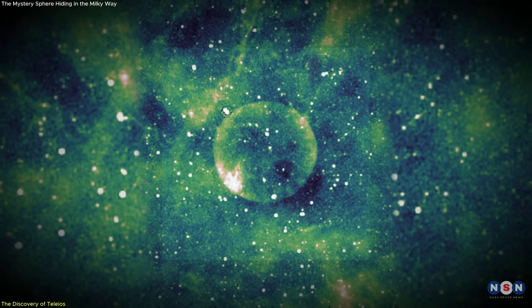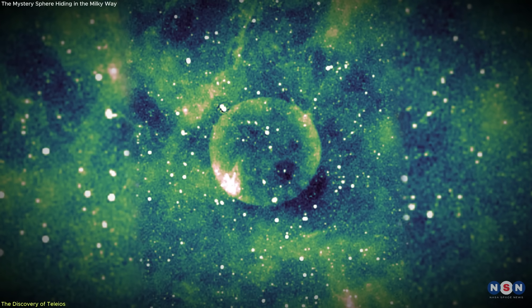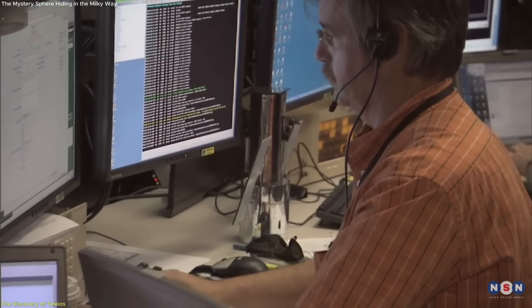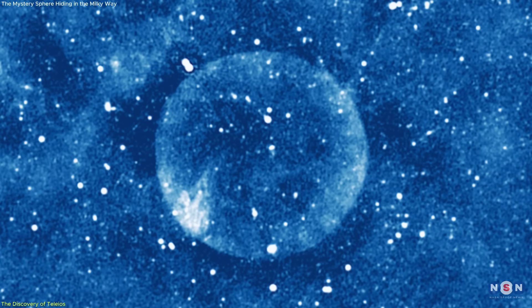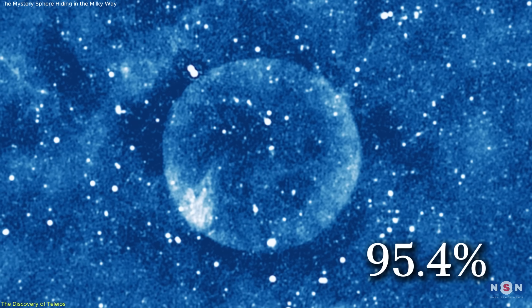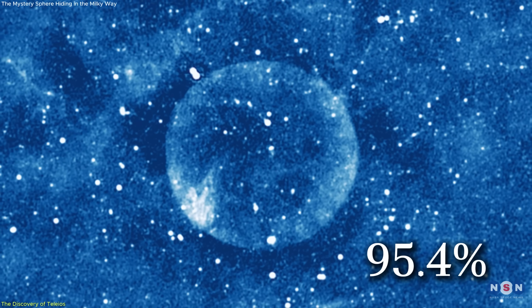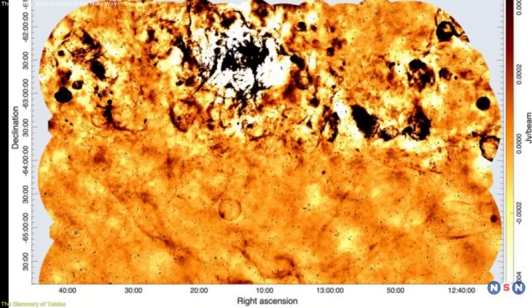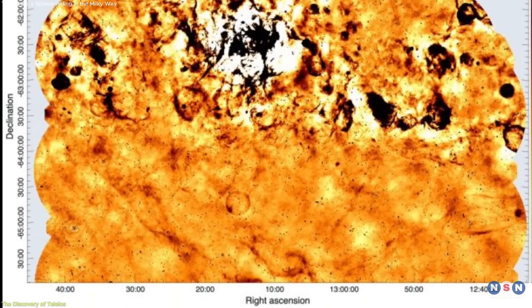Its shape wasn't just impressive, it was almost mathematically flawless. When they measured its form, the circularity came out to 95.4%, making it one of the most geometrically symmetric remnants ever observed in space. At first, it was unclear how big it actually was.